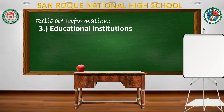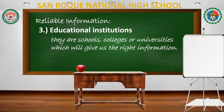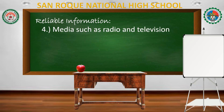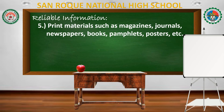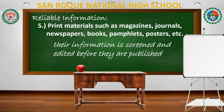Third is educational institutions — schools, colleges, and universities — which will give us the right information. Number four: media such as radio and television. Their information is screened first before it is aired, so they cannot give wrong information. Number five: print materials such as magazines, journals, newspapers, books, pamphlets, posters, and more. Their information is screened and edited before being published.